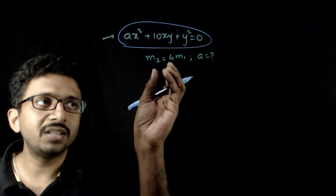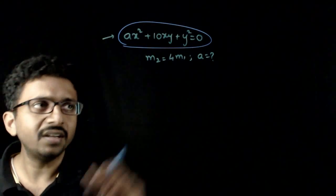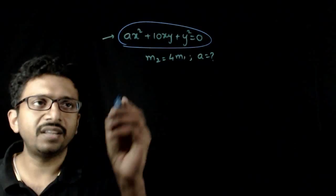That is, if m₁ and m₂ are the slopes of two lines, m₂ is equal to 4m₁. If that is so, you are asked to find the value of a.